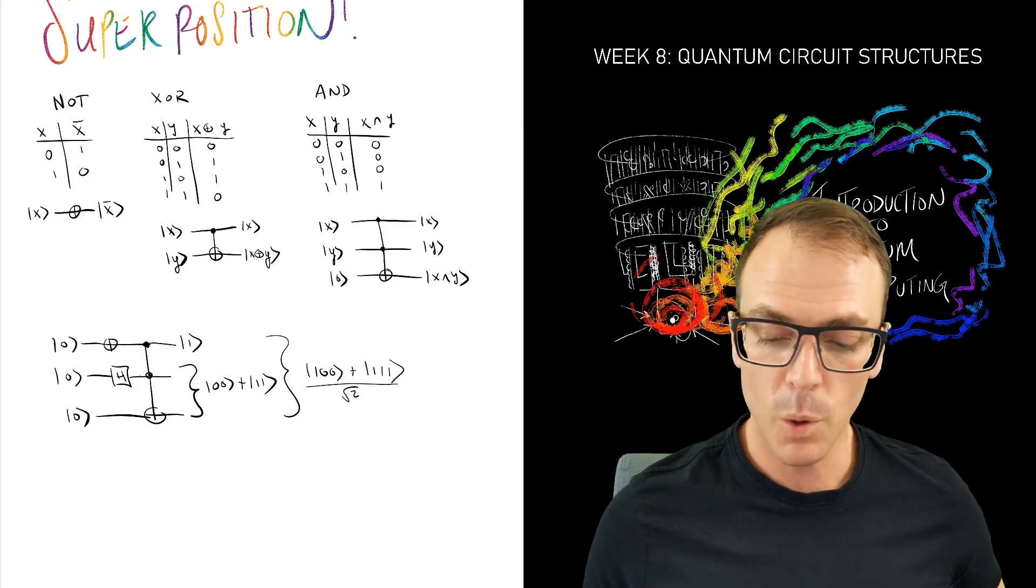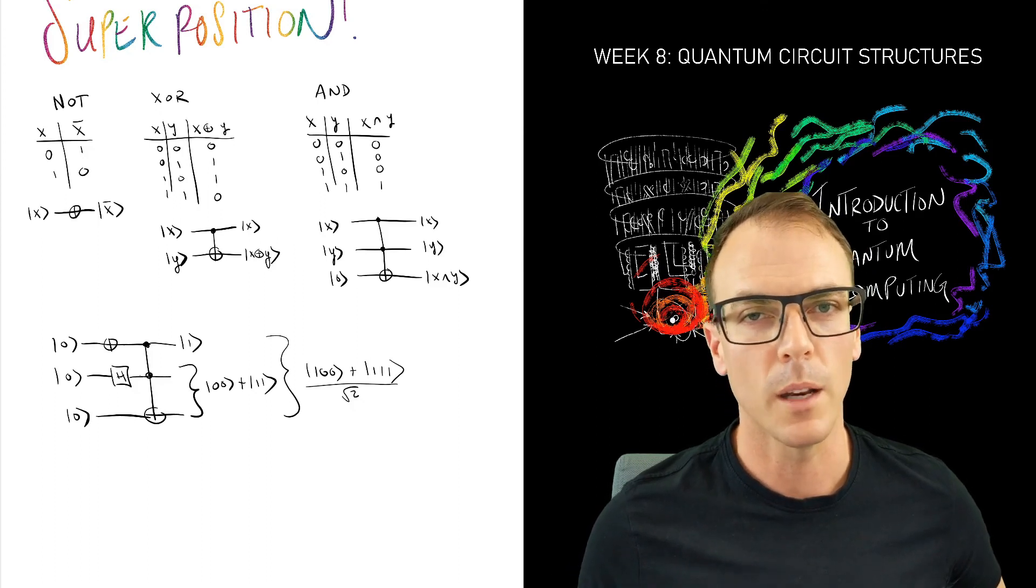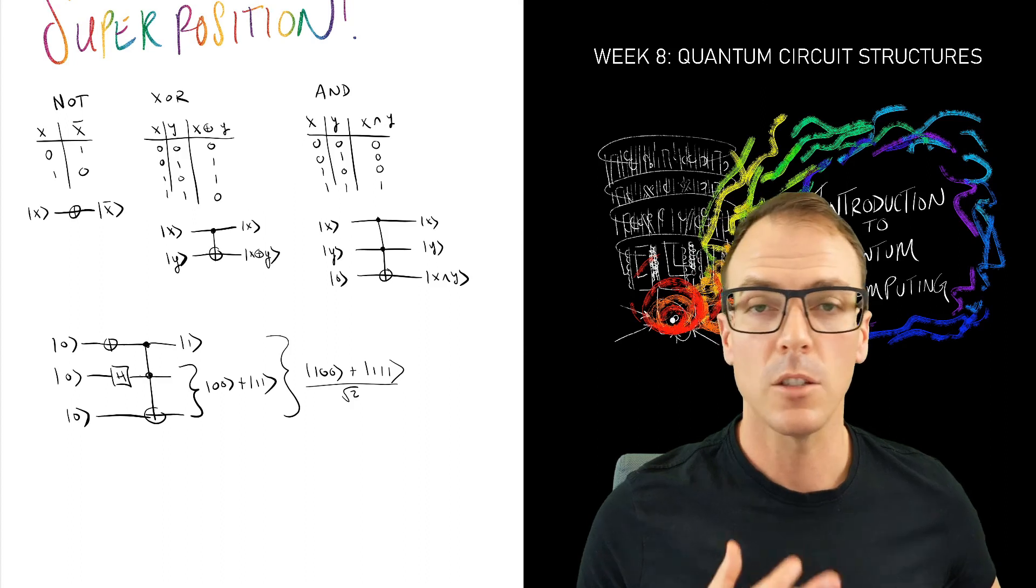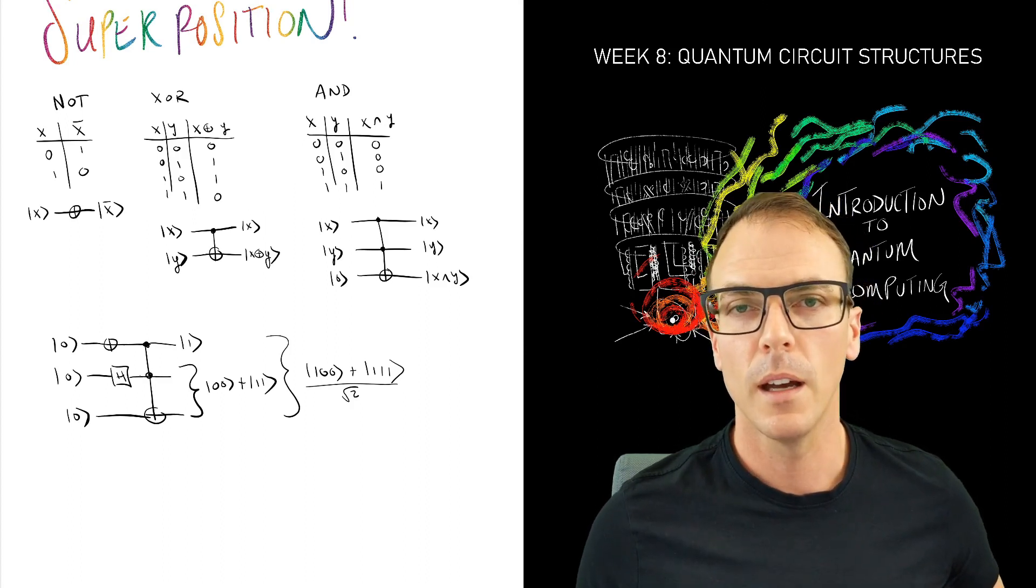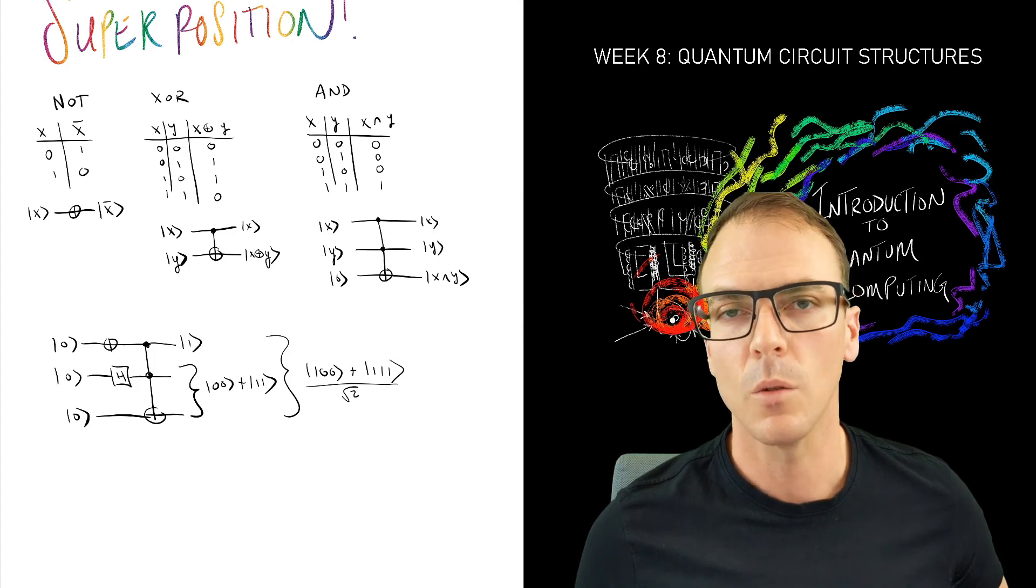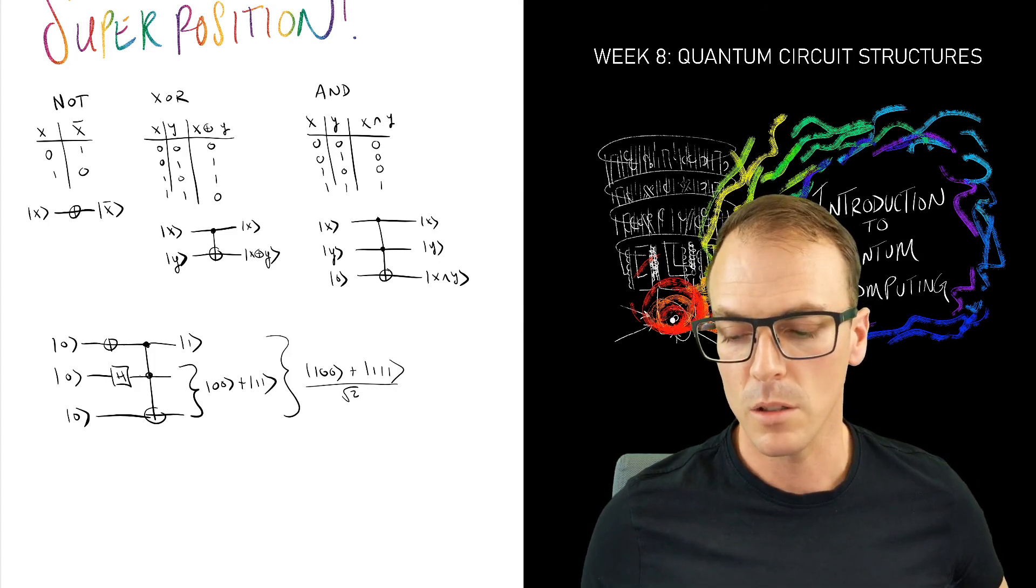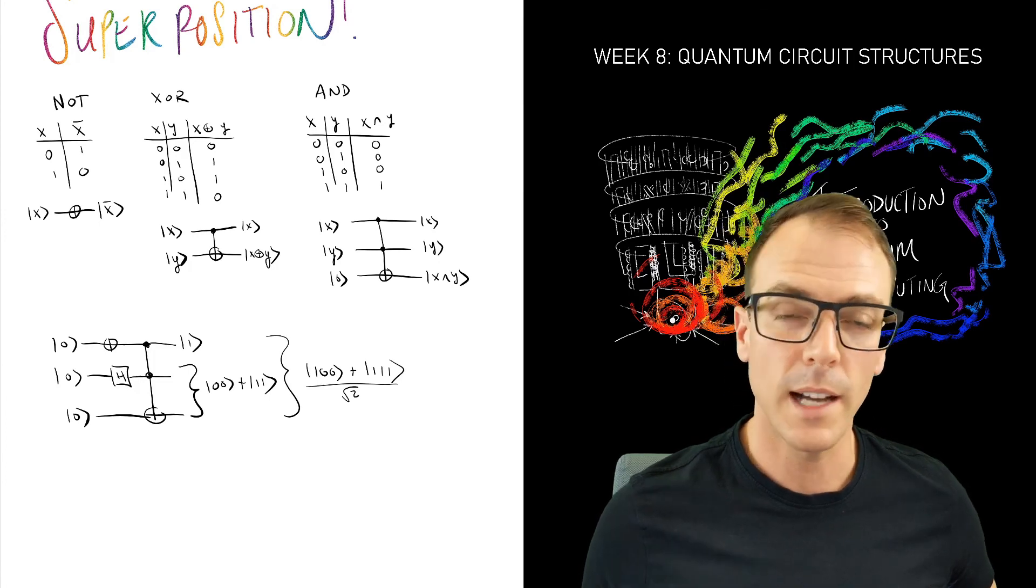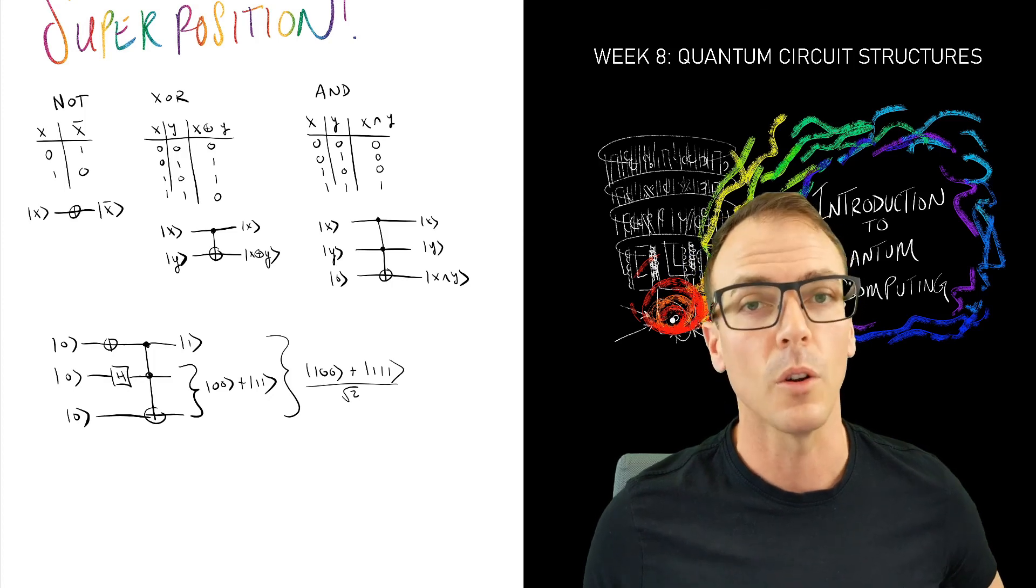At this point if we measured we're going to get a random outcome, and unless we're trying to create a random number generator that's not useful. So this is not sufficient to perform an interesting quantum computation, but definitely these sorts of superpositions of classical logic are necessary components of quantum circuits and we'll see them over and over again.